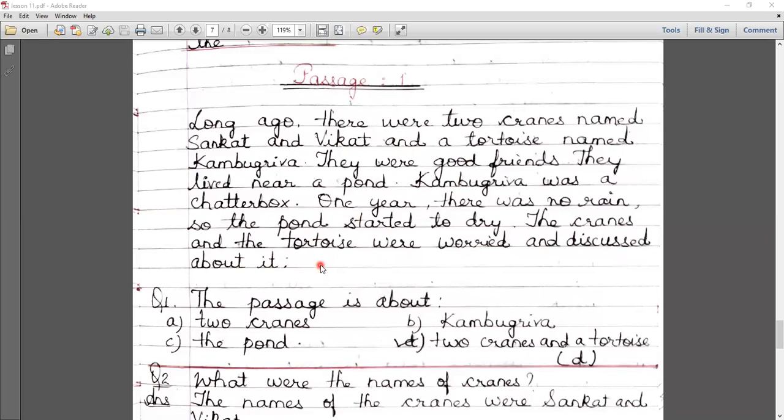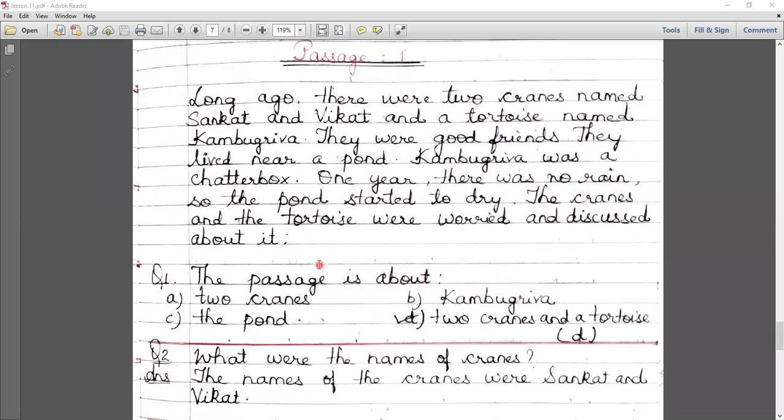One year there was no rain. The pond started to dry. The cranes, the cranes and the tortoise were worried and discussed what to do. They would die of starvation.